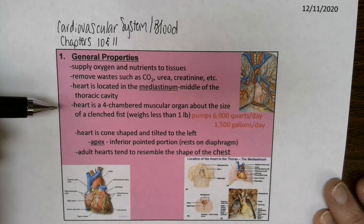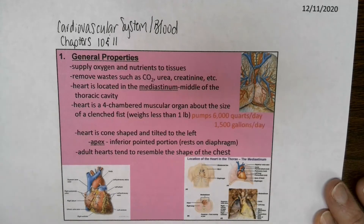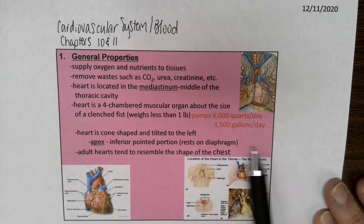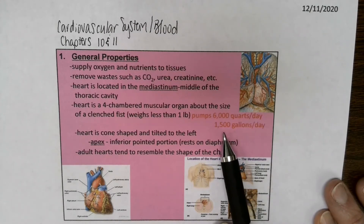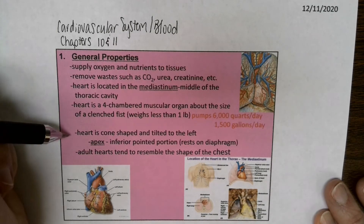The heart in general is a four-chambered organ. It's really muscular, it's about the size of your fist when you clench your fist, and it weighs less than a pound. It pumps about 6,000 quarts of blood a day — that's 1,500 gallons. So if you think of a gallon of milk, 1,500 gallons of milk a day are getting pumped by the heart.